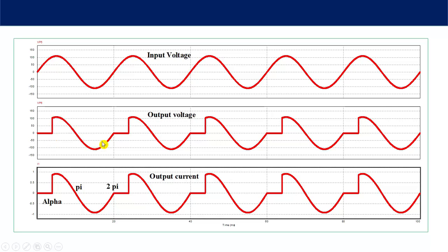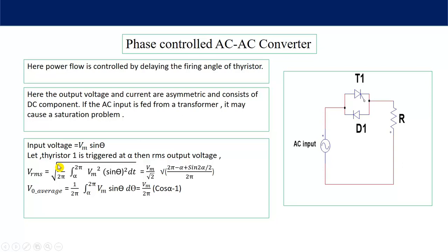The RMS output voltage can be found by integrating from alpha to 2π. It equals (Vm/√2) × √[(2π − α + sin(2α)/2) / (2π)]. By controlling the firing angle alpha, you can control the output voltage — this is the purpose of the AC to AC converter. The average output voltage equals (Vm/2π)(cos α − 1), which is not zero, confirming that a DC component exists in the system.